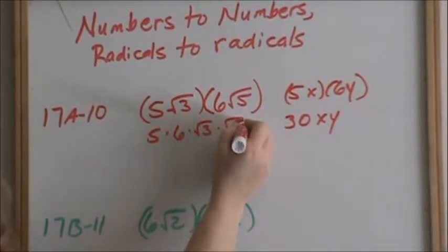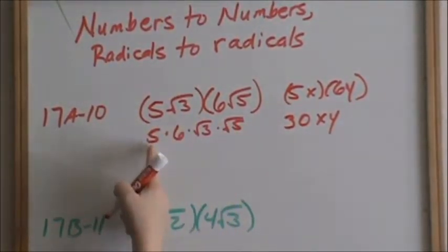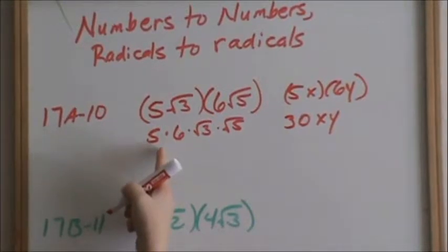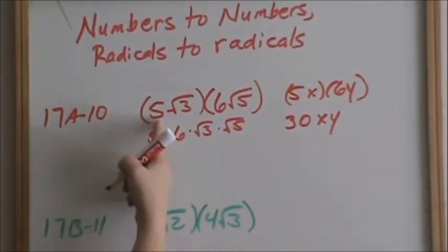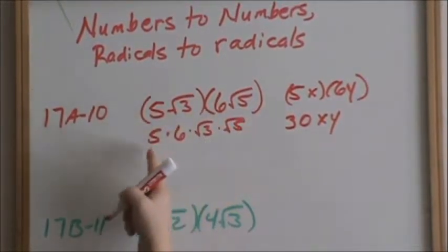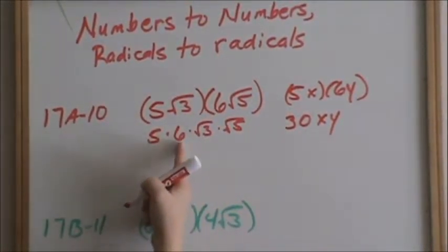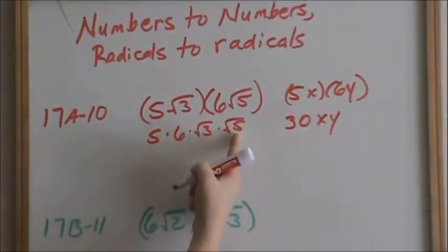You can move multiplication around and you will still get the same answer. So 5 square root of 3 times 6 square root of 5 is the same thing as saying 5 times 6 times square root of 3 times square root of 5.